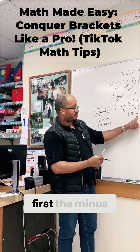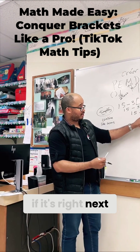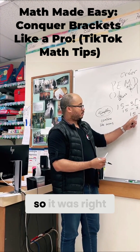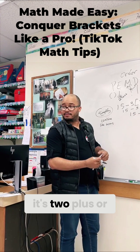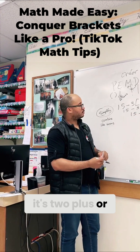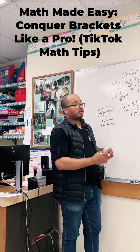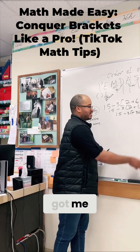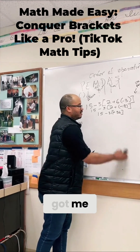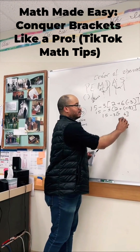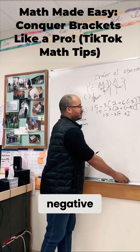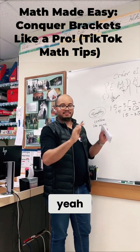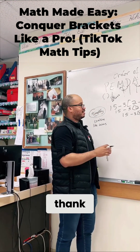What do we do first? The minus, or if it's right next to it, it's multiplication? So it was right — it's 2 plus or 2 multiplied? He's right, it's not multiplied. He got me. It's not multiplied — I made my mistake. 2 plus negative 18 is 16. Very good, Captain. Thank you. Hopefully you guys saw that too.